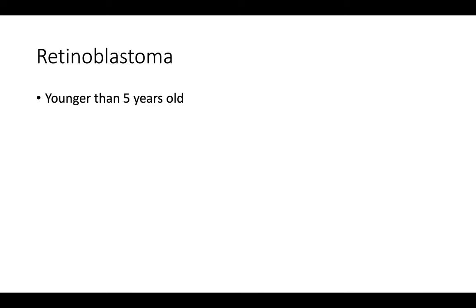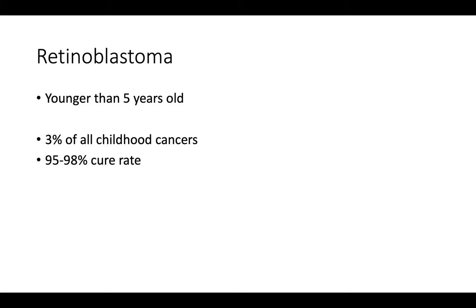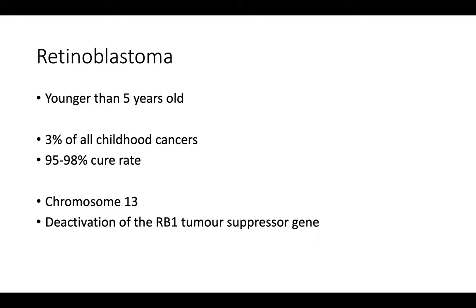Retinoblastoma is a childhood cancer and most cases are found at a very young age. It accounts for around 3% of all childhood cancers, so it's quite rare. However, it does have a very good prognosis if caught early. Chromosome 13 is involved because it carries a gene called the retinoblastoma 1 gene, which is a tumour suppressor gene.